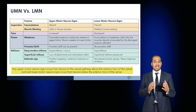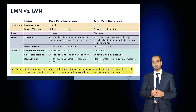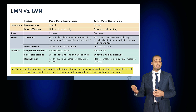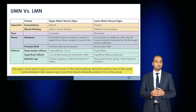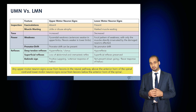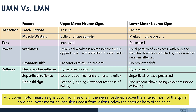Tone becomes hypertonic or increased in upper motor neuron signs and decreased in lower motor neuron signs. Power demonstrates pyramidal weakness in upper motor neuron signs — that is, the extensors are weaker in the upper limbs and the flexors are weaker in the lower limbs — whereas in lower motor neuron signs there is a focal pattern of weakness with only the muscles directly innervated by the damaged neurons being affected. In upper motor neuron signs you may also note pronated drift.